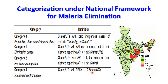Category 2 states are in the pre-elimination phase, constituting states and union territories with an overall parasite incidence less than one but with some districts reporting API more than one. Eleven such states were identified. Category 1 — the elimination phase — included states and union territories showing API less than one in all their districts; 15 such states and union territories were reported.